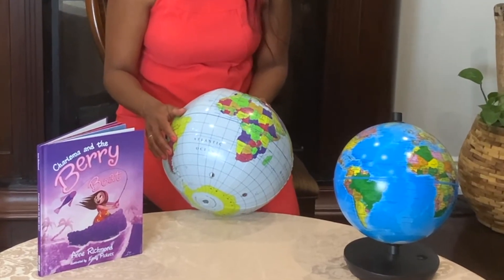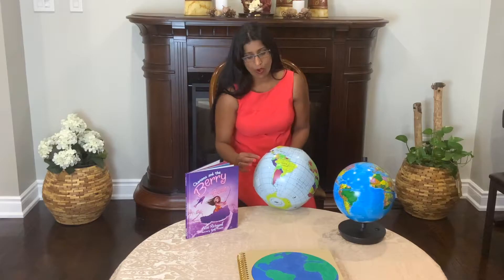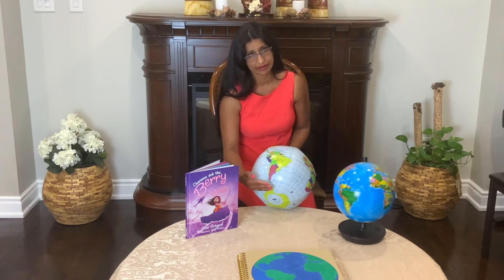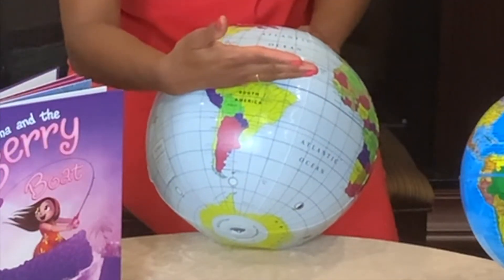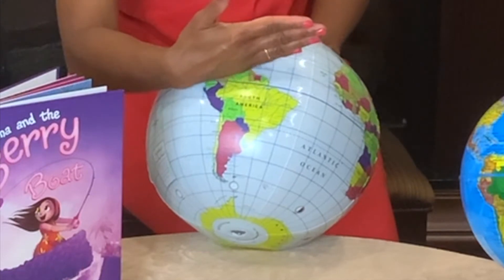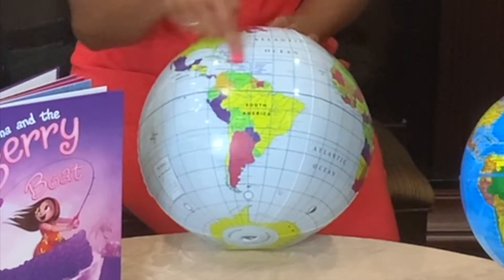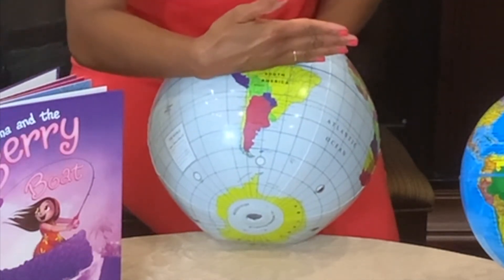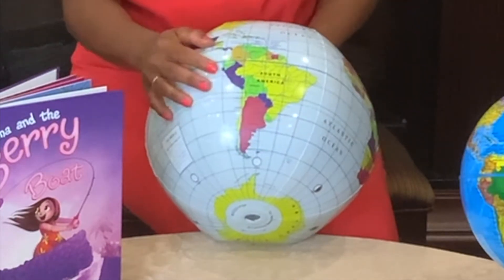The last two circles of latitude we are going to learn today are called the Tropic of Capricorn and the Tropic of Cancer. All the circles of latitude are measured from the equator. The equator is zero degrees. The rest of the circles are measured one degree to the north, two, three, and so on going up. And when it goes down, we measure it from the equator: one degree south, two degrees south, and so on.